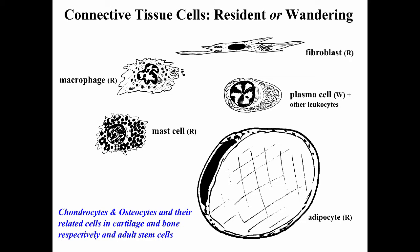Most of the cells I'm going to talk about in this podcast are resident cells — cells like fibroblasts, macrophages, mast cells, and adipocytes. Plasma cells, as well as the other leukocytes, are considered wandering cells that come into connective tissue. We'll talk about plasma cells in this podcast and cover other leukocytes when we discuss blood cells in later podcasts. Chondrocytes, osteocytes, and adult stem cells can also be considered resident cells of connective tissue.